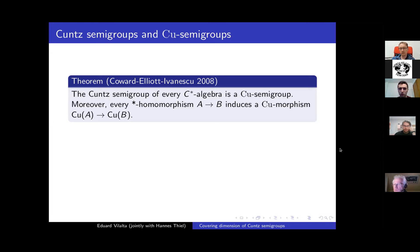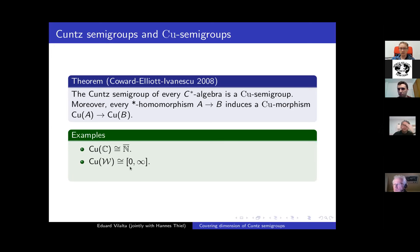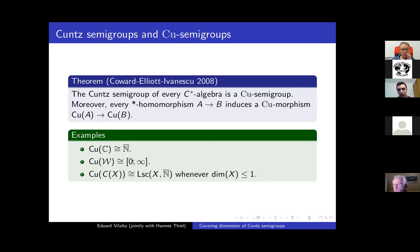To give some examples of Küng semi-groups: the Küng semi-group of the complex numbers is N-bar. The Küng semi-group of the Jiang–Su algebra is the non-negative extended real line. And the third example: if you have a compact metric space X, then the Küng semi-group of the continuous functions over X is LC(X, N-bar) whenever the dimension of X is no greater than one. These are just some examples of Küng semi-groups.